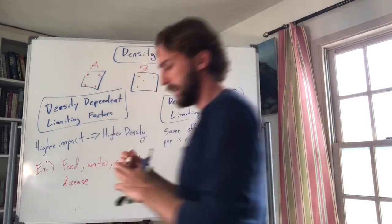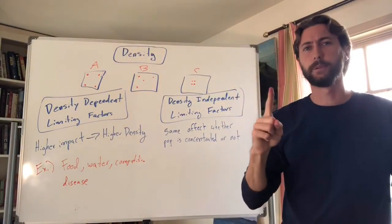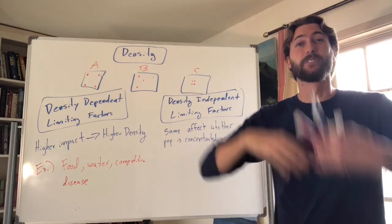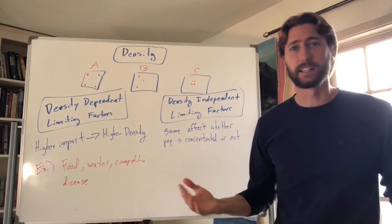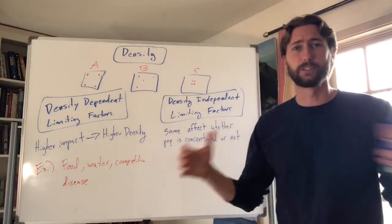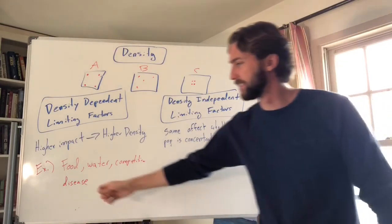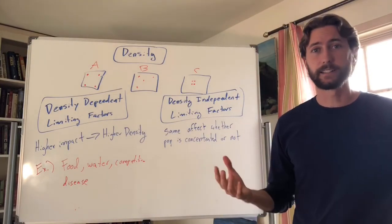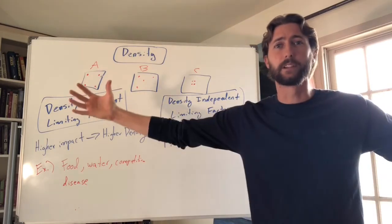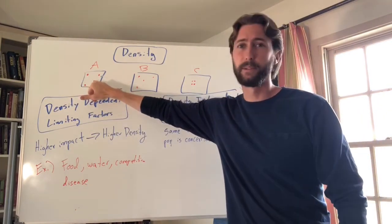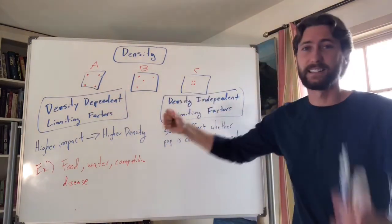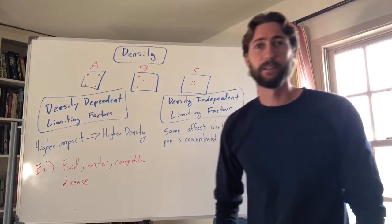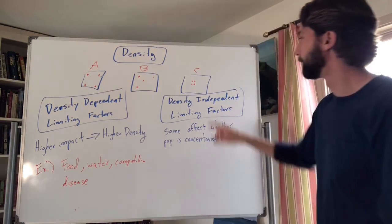If there's one person in the classroom and one hamburger, that person is completely fine. But if there are 30 people and one hamburger, not everybody gets food — it depends on the density of individuals. Disease is a great example too: during COVID-19, we practiced social distancing, which is like Box A — staying spread apart. But if people are packed close together, the disease spreads much more easily. That makes it a density dependent limiting factor.